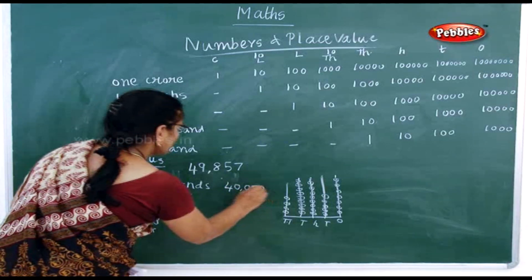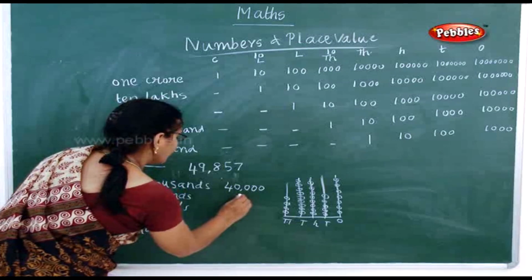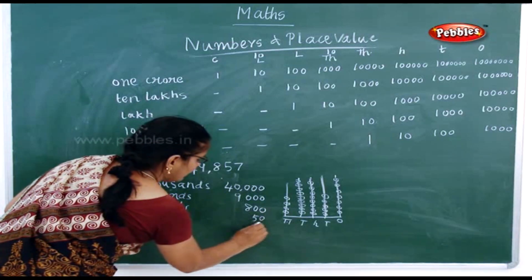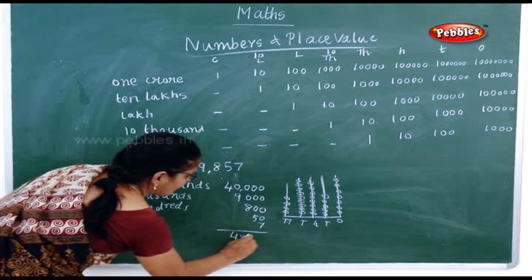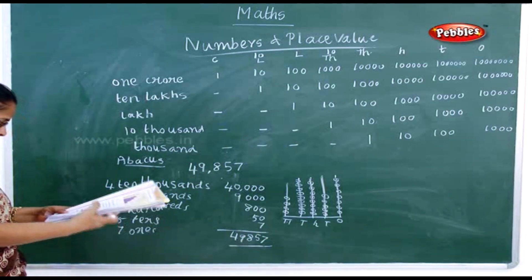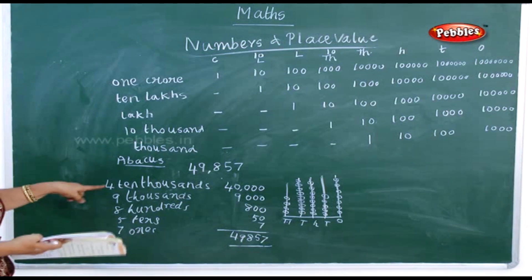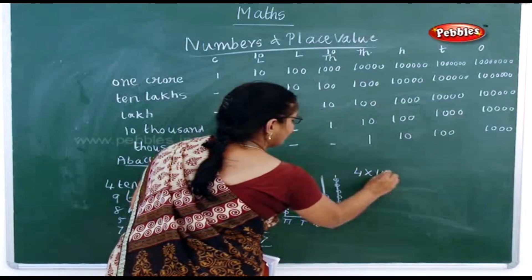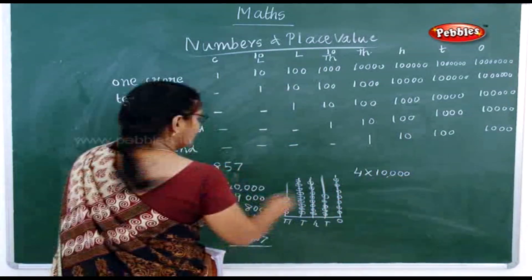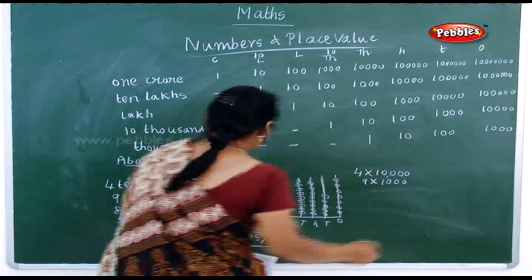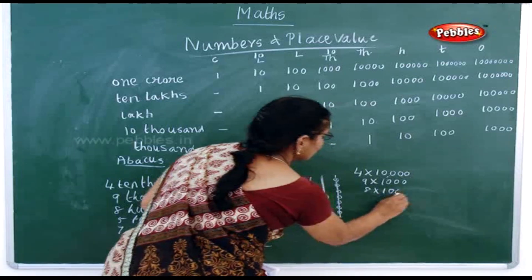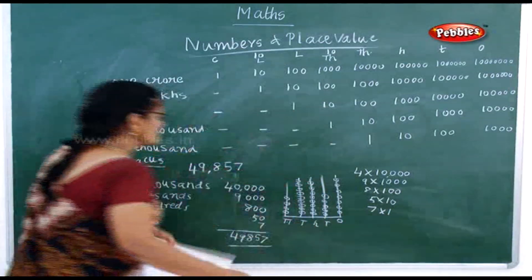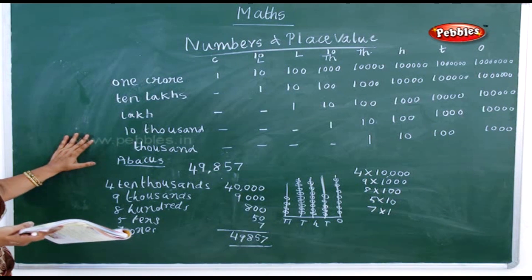In expanded form: 40,000 + 9,000 + 800 + 50 + 7 = 49,857. You can also write it in abacus form as: 4 × 10,000 + 9 × 1,000 + 8 × 100 + 5 × 10 + 7 × 1. This is how you write it in abacus form.